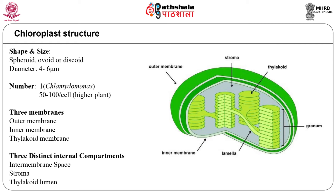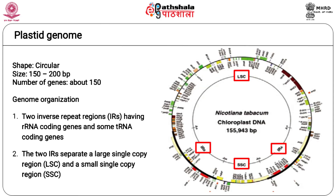Depending on cell and tissue type, plastids are specialized for the synthesis and accumulation of various metabolites. The chloroplast is a site of photosynthetic activity and is surrounded by two membranes — the outer one being a product of the plant membrane while the inner one is derived from the ancestral prokaryotic plasma membrane. Chloroplasts are thought to have evolved as a result of endosymbiosis between a host eukaryotic cell and a prokaryotic organism, most likely a cyanobacterium.